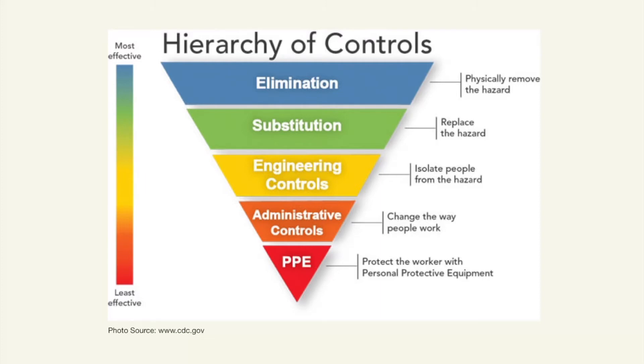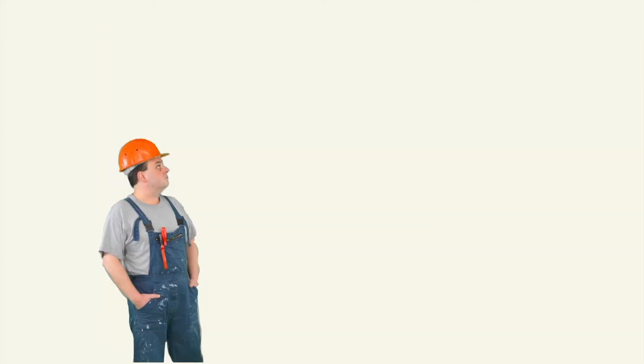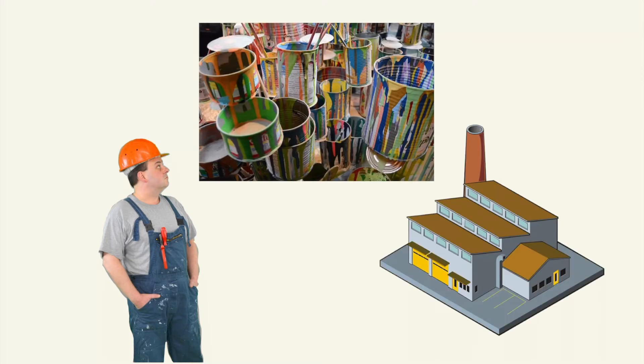We will go into each level of control in detail. However, it is easier to understand each of these types of controls through the use of an example. We will use the example of a fictional worker named Bob, who works at a factory which manufactures paints. In the process of creating paint, he is potentially exposed to a number of hazardous ingredients on a daily basis. How does the workplace ensure that Bob's health and safety is protected, while still being able to continue his work in manufacturing paints on a daily basis?